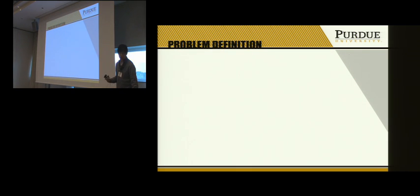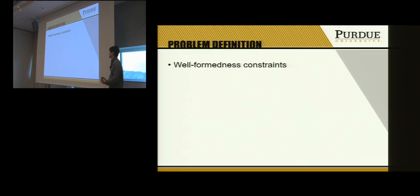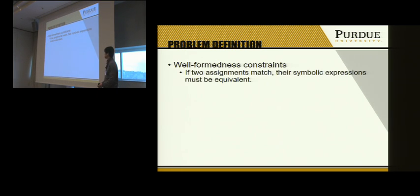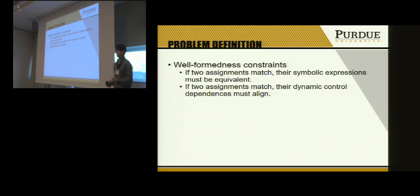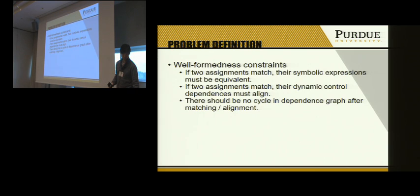To define the problem formally, I will define the rules for valid matchings, called wellformedness constraints. The first rule is that if two assignments match, their symbolic expressions must be equivalent. The second rule is that if two assignments match, their control dependencies must align — meaning two matched assignments should be in the same control structure. The third rule is that there should be no cycle in the dependence graph.